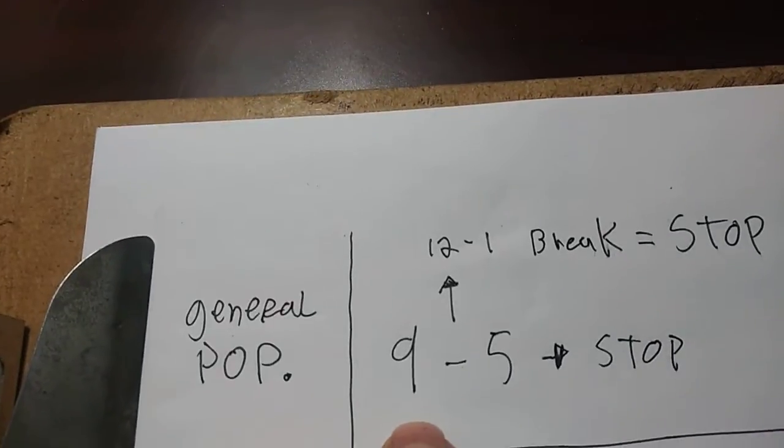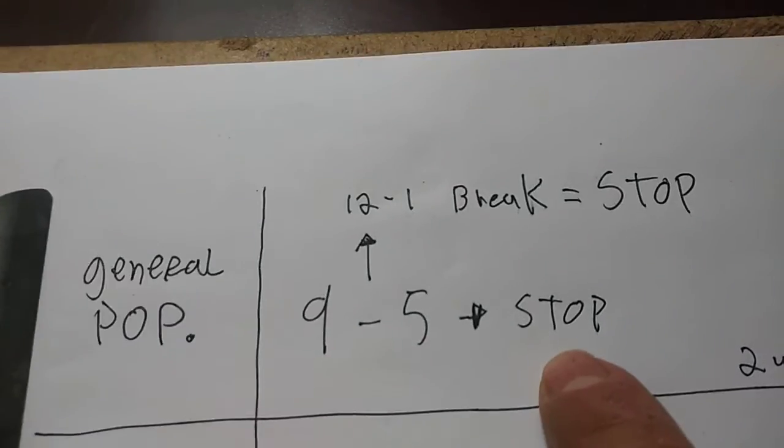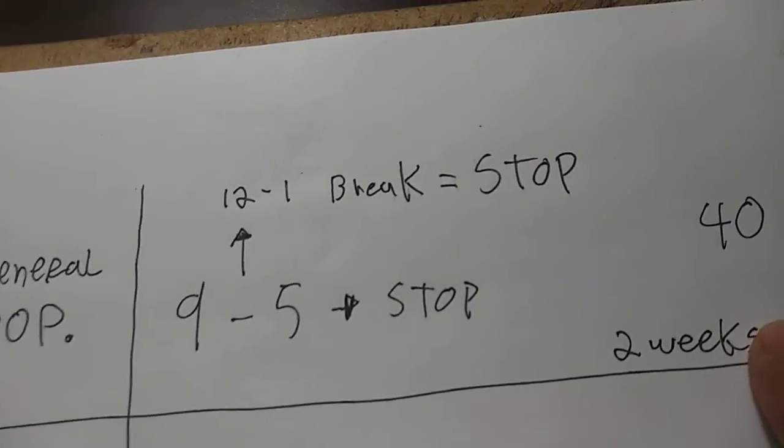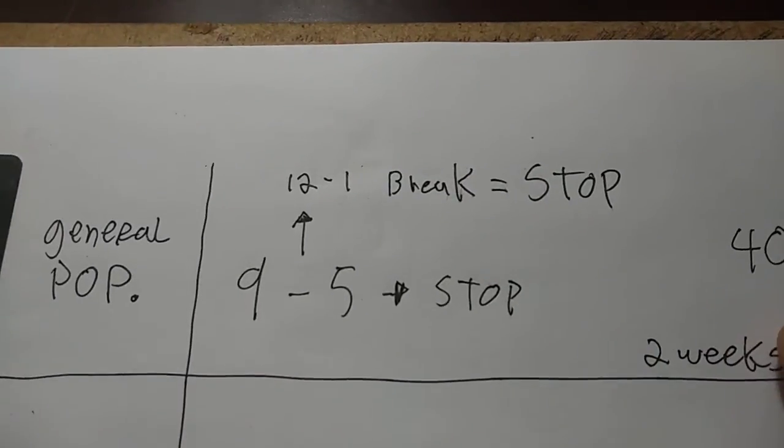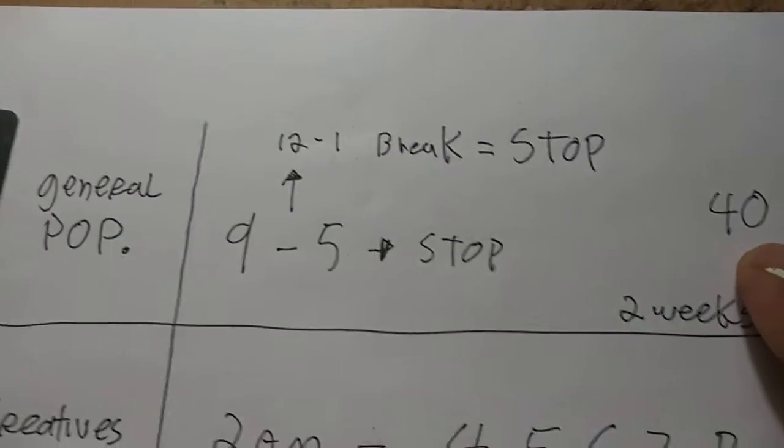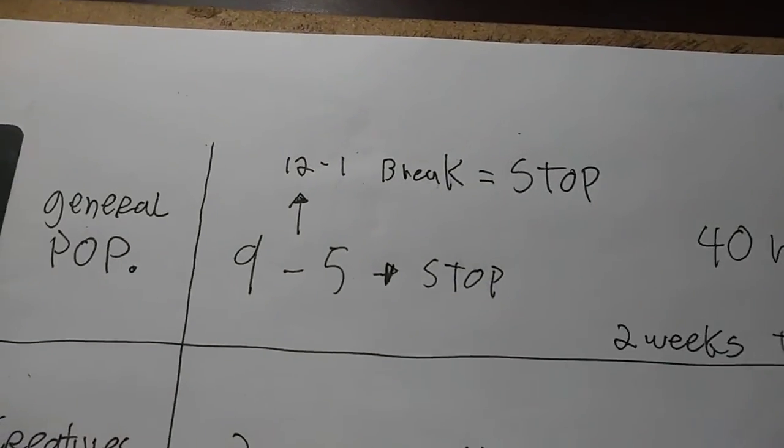The general population starts at 9 and they have a one-hour break in between, and they stop at 5. Then they have to reset their mind with their whole private life and put that aside for the next week or the next day. So they make 40 hours in five days, so for an 80-hour task, it takes them two weeks.